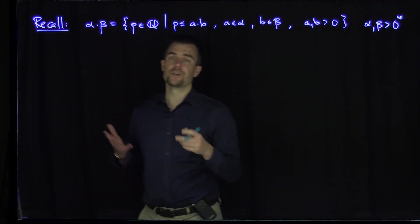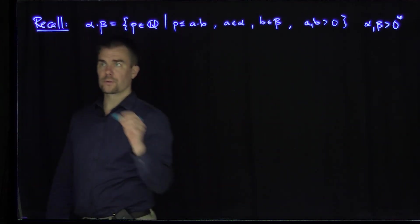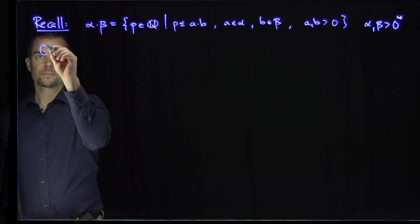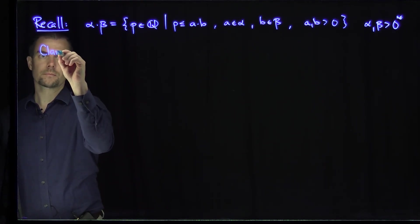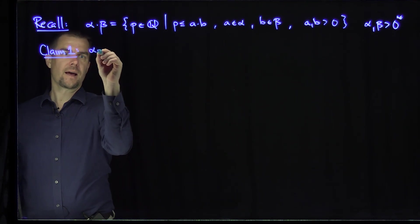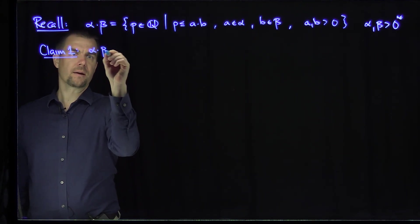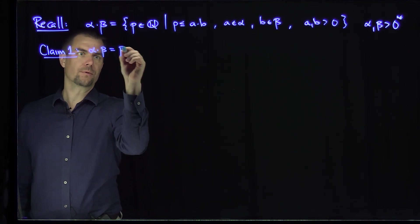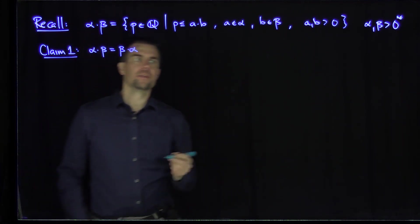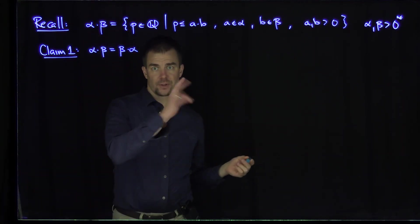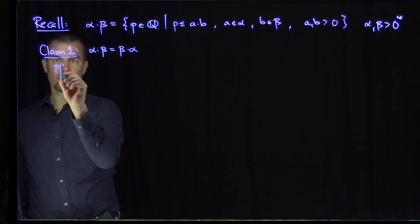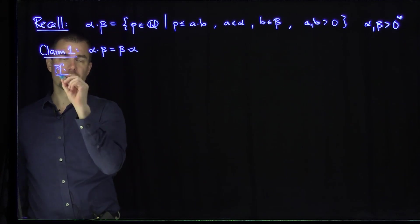Now I'd like to show that this operation is commutative. So claim one is that α·β is equal to β·α. And this is basically a tautology because ℚ is commutative. So let's prove this first claim — it's relatively straightforward. We'll do one direction.